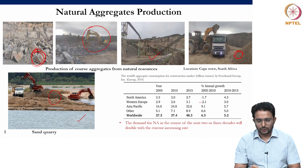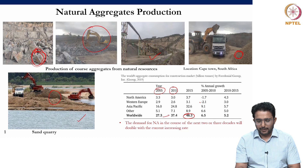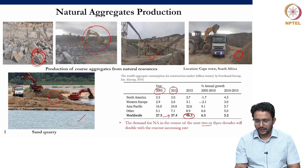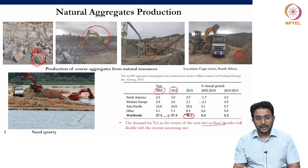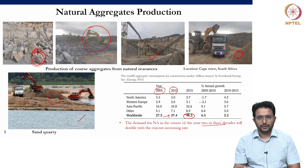Let us see what is the total consumption of natural aggregates globally. In 2015, the total worldwide demand for natural aggregates was roughly around 50 billion tons per annum. Comparing with previous data, every five years the demand increases by roughly 10 billion tons, and it is predicted that in the next 2 to 3 decades the demand for natural aggregates will increase by 2 to 3 folds — meaning a significant quantity will be required in the future.